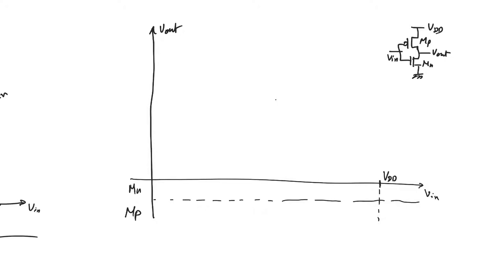It's important to recall that for the NMOS, V-output is VDS. For the PMOS, VDS is V-output minus VDD. For the NMOS, VGS is V-input. And for the PMOS, VGS is V-input minus VDD.